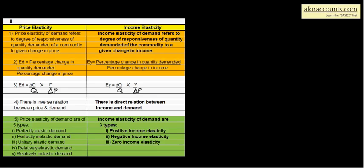Let's start with the difference between price elasticity and income elasticity. When demand changes due to a change in price, we call it price elasticity. Price elasticity of demand refers to the degree of responsiveness of quantity demanded of a commodity to a given change in price. The degree of responsiveness of quantity demanded to a given change in price is known as price elasticity of demand.